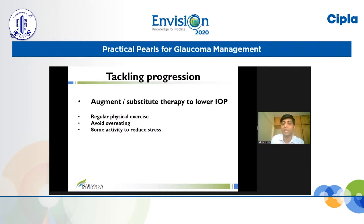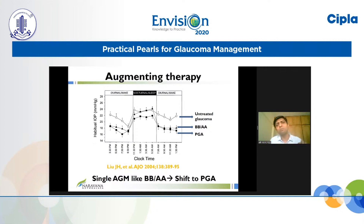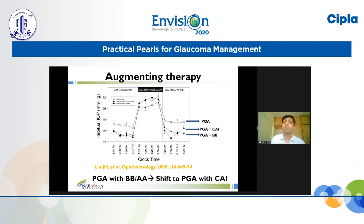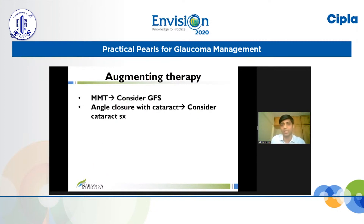How do we treat progression? The most successful option is to augment therapy. In addition, I advise regular physical exercise, avoiding overeating with some caloric restriction, and activities to reduce stress — such as meditation or time away from stressful situations. For augmenting therapy: if the patient is on a single agent like a beta blocker or alpha agonist, sleep lab experiments show nocturnal IOP reduction is not favorable, so shift them to a prostaglandin analogue (PGA).